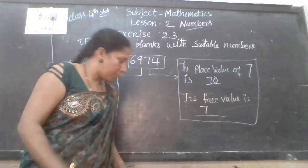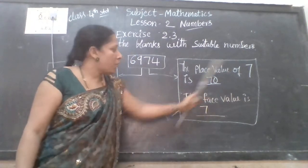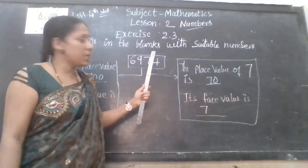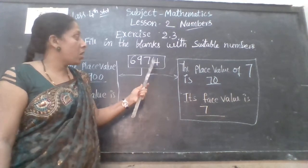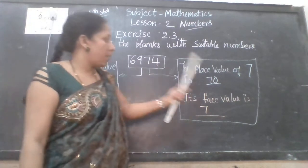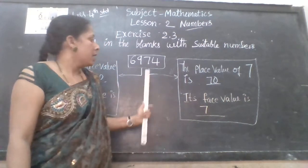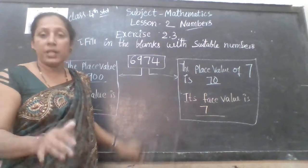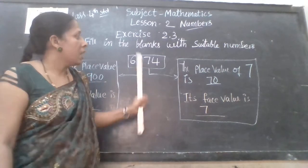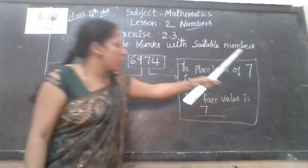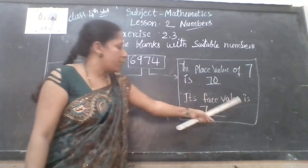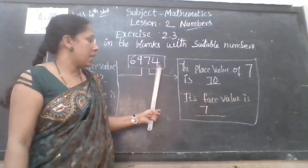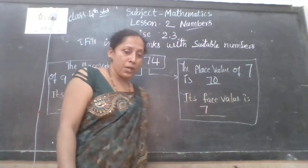In this number, the place value of 7 is dash. You have to find out the place value of 7. 7 is in which place? Tens place. So 7 tens means 70. 70 is the place value. Next — its face value: 7's face value is 7 itself. The place value of 7 is 70, its face value is 7. You have to observe where 7 is — in the tens place, so 70.